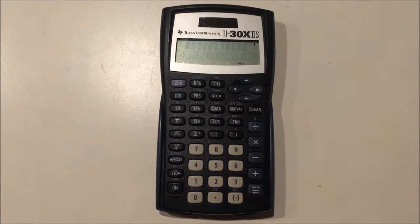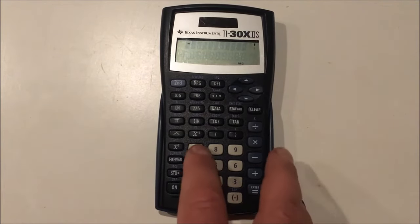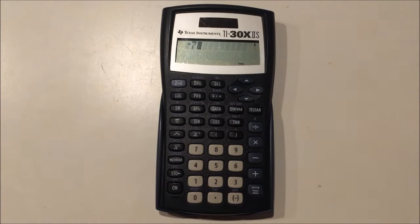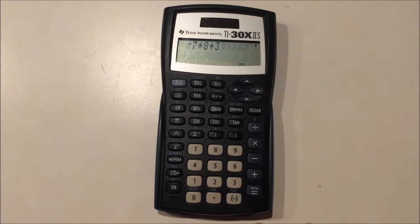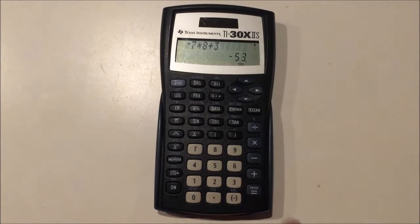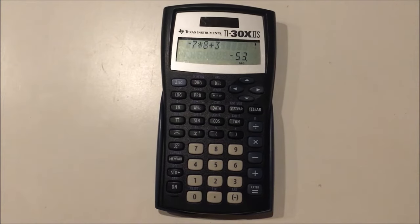If you do want negative 7 for example, you would type the negative button and then 7. That will give you negative 7. So negative 7 times 8 plus 3 for example, if we want to do that calculation again, we should get negative 53. So these are how negatives are handled.